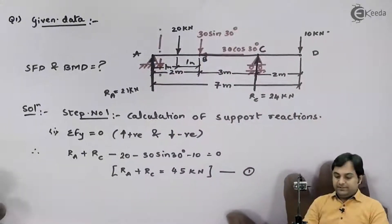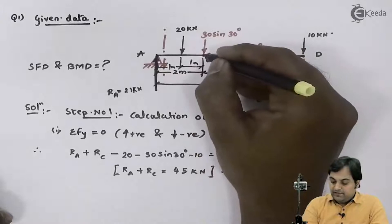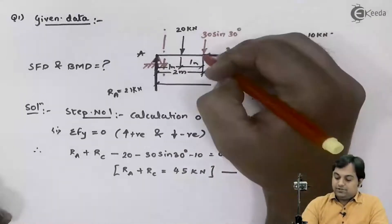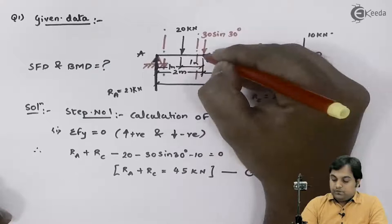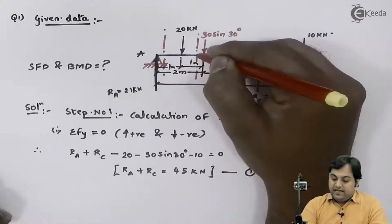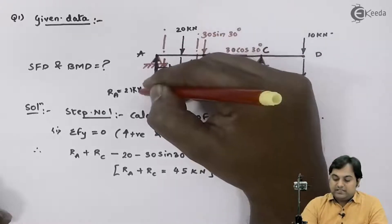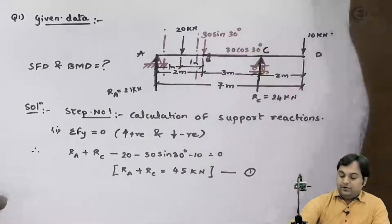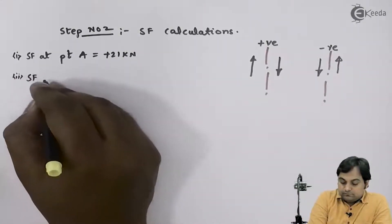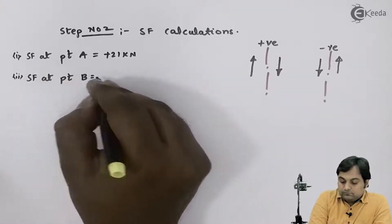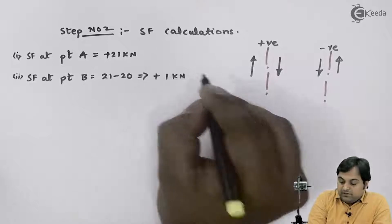After this I will be calculating shear force. I'll take the section just to the left of point B. To the left I have two forces: one is RA upward, the other is 20 downward. So RA is positive, 20 will be negative. SF at point B equals 21 minus 20, that is equal to plus 1 kilonewton.